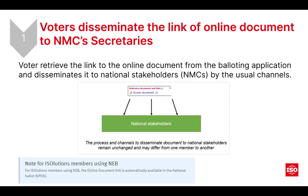Step one: you'll get the link from the balloting application. Rather than having a document to download, you're just going to have a link. You won't be downloading or attaching any files — this link you can send out through your usual channels for those to access. An additional note for those iSolutions members using national electronic balloting: if you're using national electronic balloting, you'll have the online document link automatically available to the national ballot.